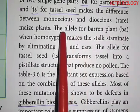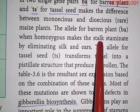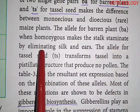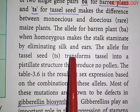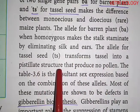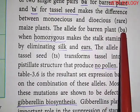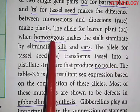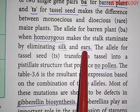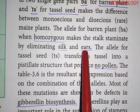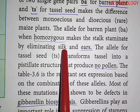The allele for barren plant, when homozygous, makes the stalk staminate by eliminating silk and ears. The allele for tassel seed (ts) transforms the tassel into a pistillate structure that produces no pollen. The barren plant allele in homozygous condition eliminates silk and ears from the plant.